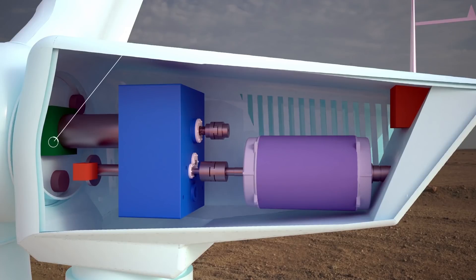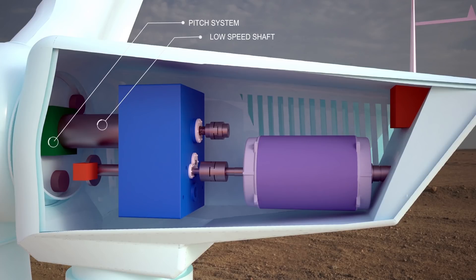The pitch system turns or pitches the blades out of the wind to control the rotor speed and to keep the rotor from turning in winds that are too high or too low to produce electricity. The low speed shaft turns at about 30 to 60 revolutions per minute. The high speed shaft drives the generator.